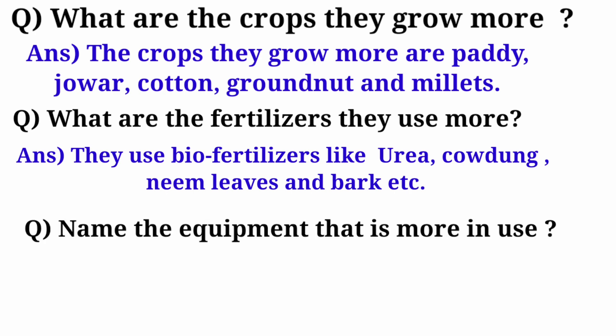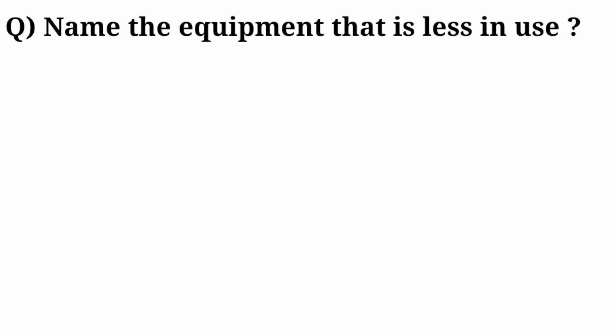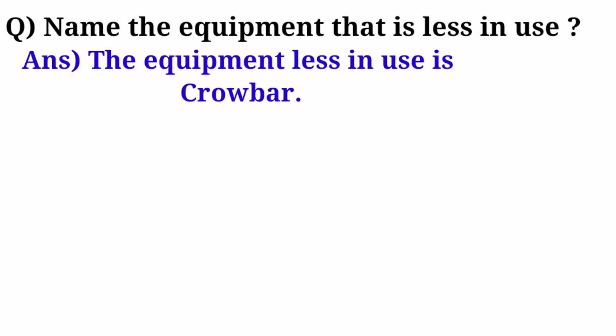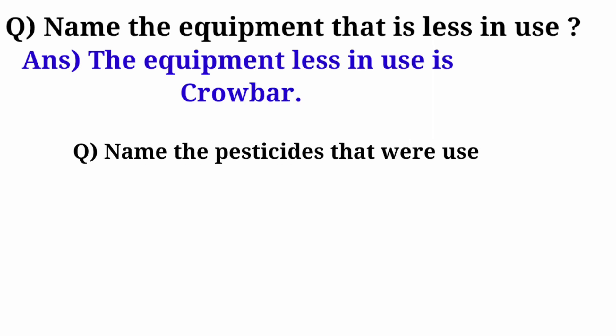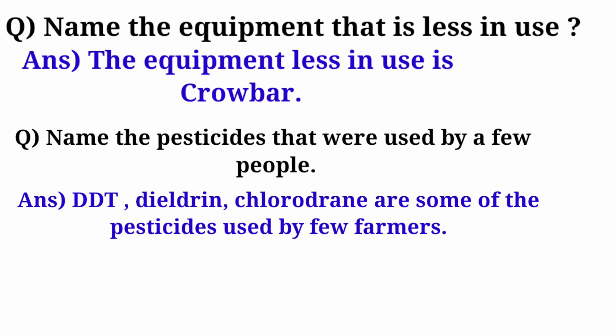Question 3: Name the equipment that is more in use. Answer: The equipment more in use is Plow. Question 4: Name the equipment that is less in use. Answer: The equipment less in use is Crowbar. Question 5: Name the pesticides used by a few people. Answer: DDT, Dildrin, Chlorodrain are some of the pesticides used by few farmers.